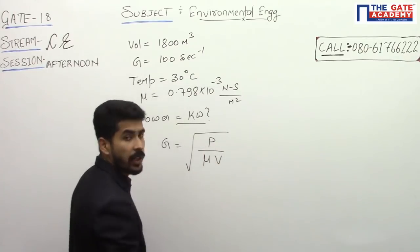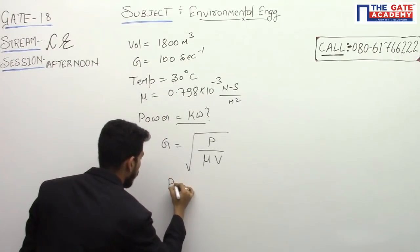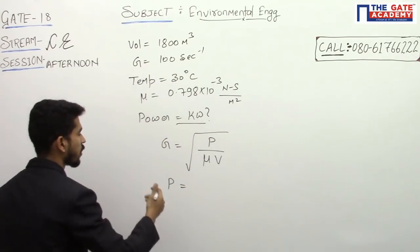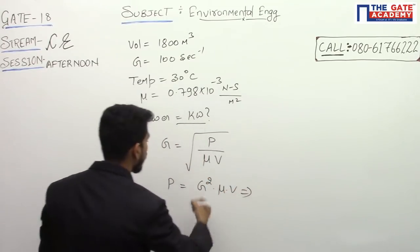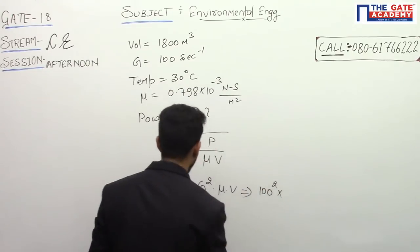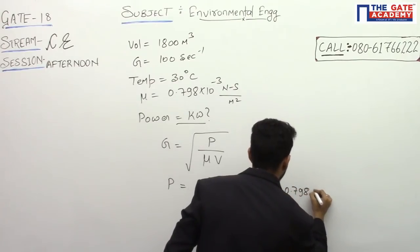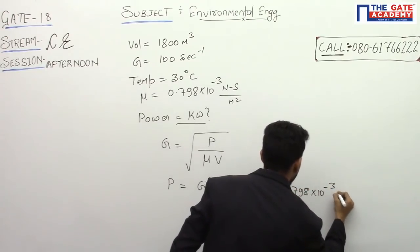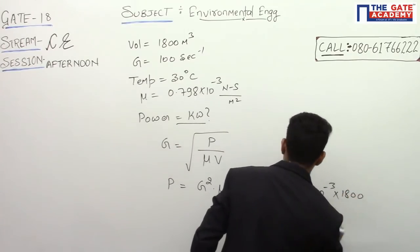We have all the data. We have to calculate power. So from this expression, power equals G square into mu into V, which is equal to 100 square into 0.798 times 10 to the power minus 3 into volume 1800 meter cubes.